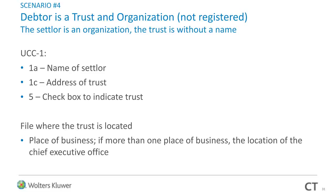Trust scenario four: the debtor is a trust, the organization is not registered, the settlor is an organization, and the trust is without a name. On box 1A, enter the name of the settlor. On 1C, the address of the trust. Check the box to indicate it is a trust. These are all slight nuances, but these are the questions that really matter when filing your UCCs.